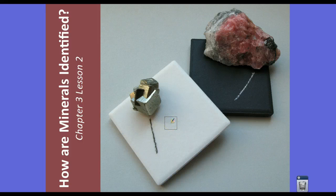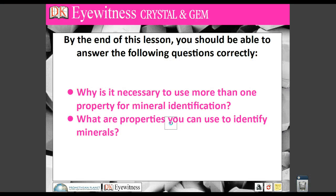Hey guys, Mr. Klein here discussing the lesson on How Are Minerals Identified? Chapter 3, Lesson 2 in your textbook. The questions we are going to be discussing today: by the end of this lesson, you should be able to answer these correctly. Number one is, why is it necessary to use more than one property for mineral identification? And question number two, where we're going to spend most of today's lesson on, is what are properties you can use to identify minerals?